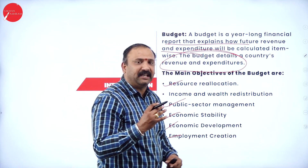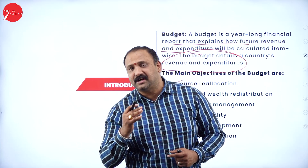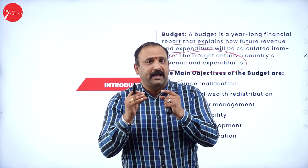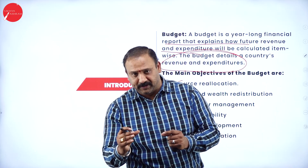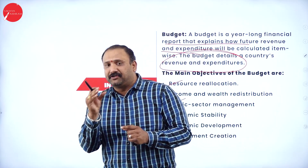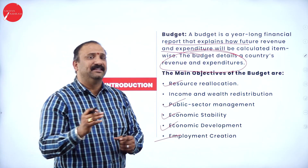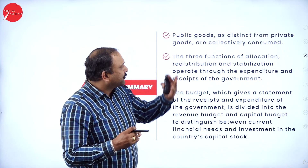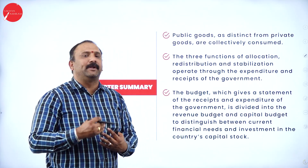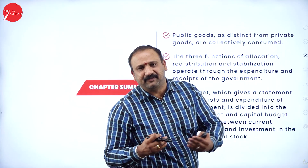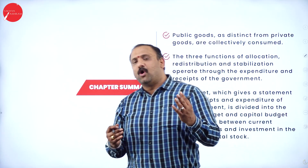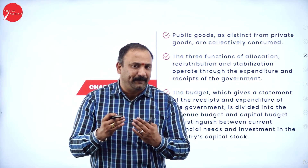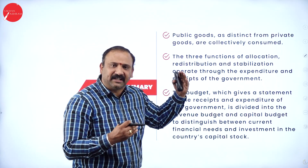Budget is the lifeline of a country that is going to help us understand how we are going to utilize resources judicially so that we can put the country on the track of progress. So the budgetary system has to be carefully devised so that there is a benefit for all. There are public goods which are distinct from private goods and are collectively consumed — these might be parks, defense, the transport system, utilities — all these things are provided by the government and used collectively by all people.